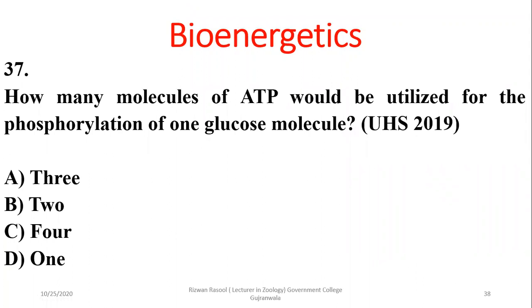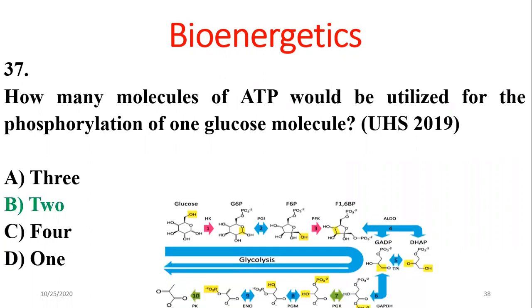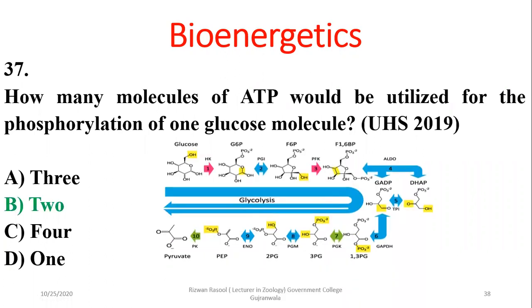Question 38: How many molecules of ATP are utilized for the phosphorylation of one glucose molecule during the preparatory phase? Two molecules of ATP are utilized for phosphorylation of glucose during glycolysis. The right option is beta.